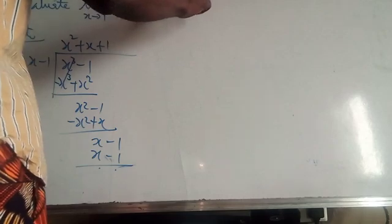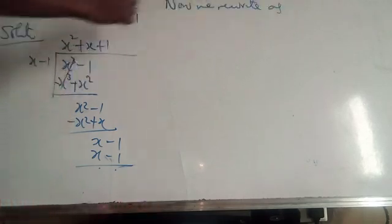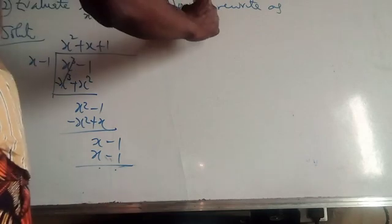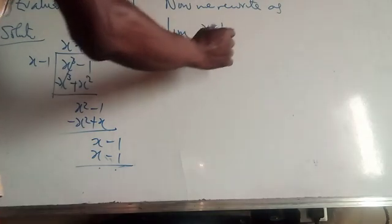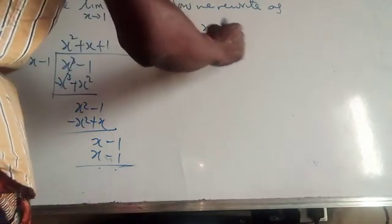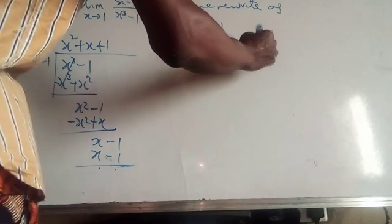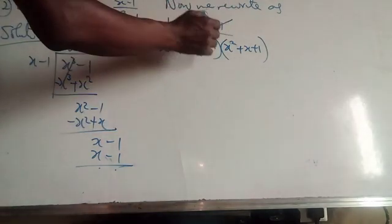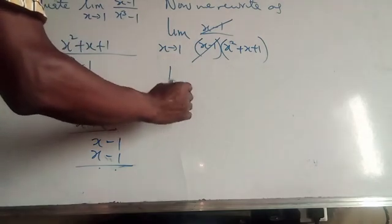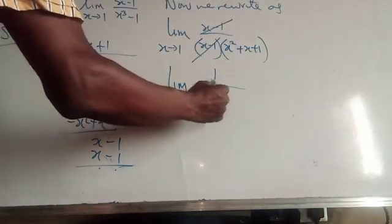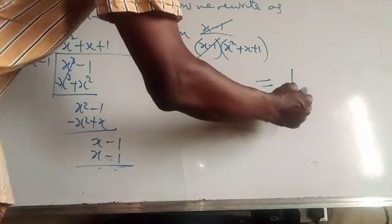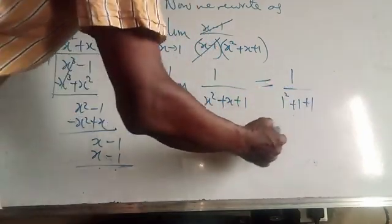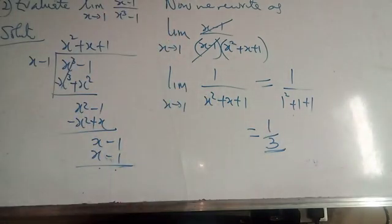We can now rewrite the problem. The limit as s tends to 1 of (s minus 1) over (s minus 1)(s squared plus s plus 1). The (s minus 1) factors cancel, leaving the limit as s tends to 1 of 1 over (s squared plus s plus 1). Substituting s = 1 gives 1 over (1 squared plus 1 plus 1), which is 1 over 3. So the limiting value of that problem is 1/3.